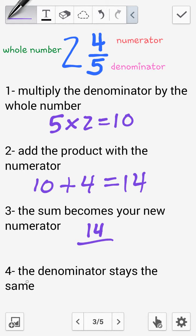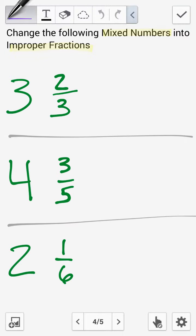And it says here the denominator stays the same. So the answer in the end ends up being 14 over 5 or 14 fifths. Let's take a look at some examples. Here we have to change the following mixed numbers into improper fractions.